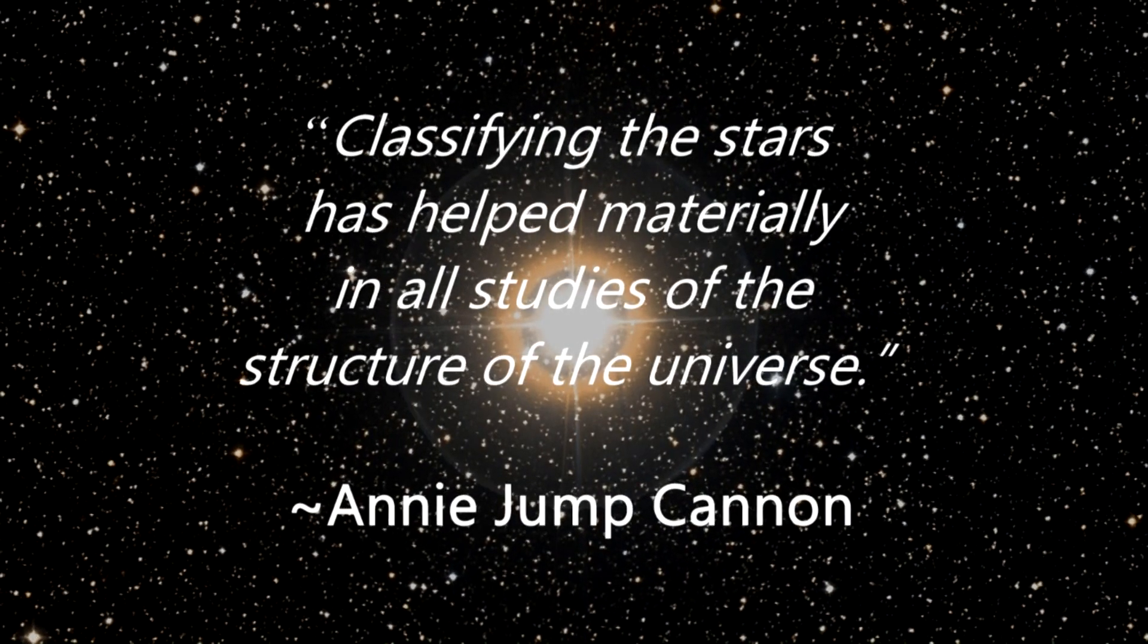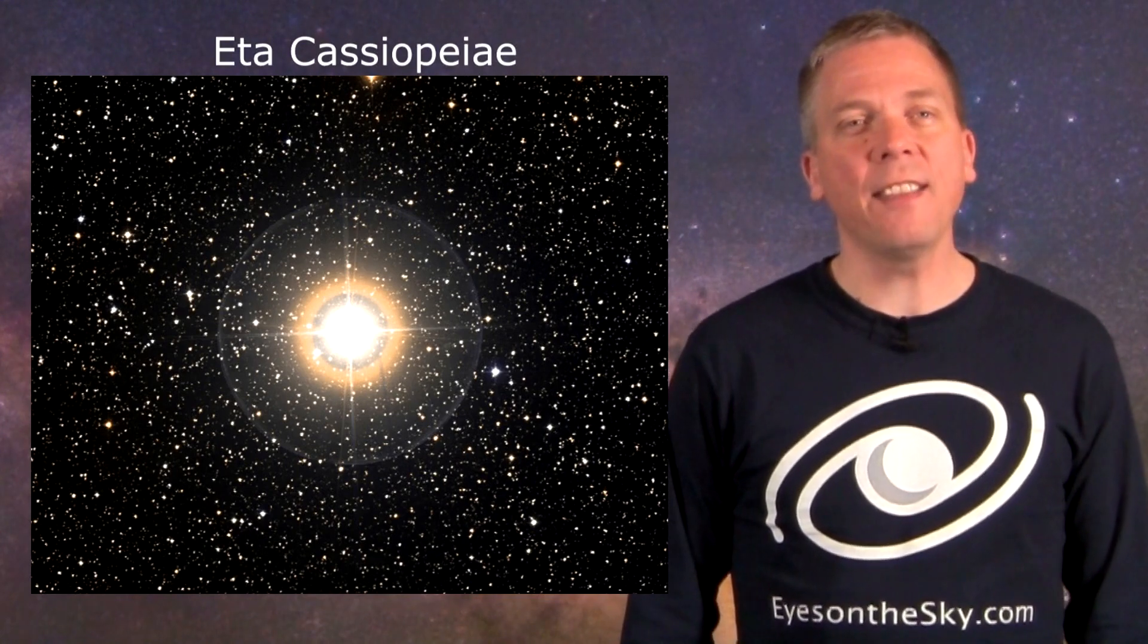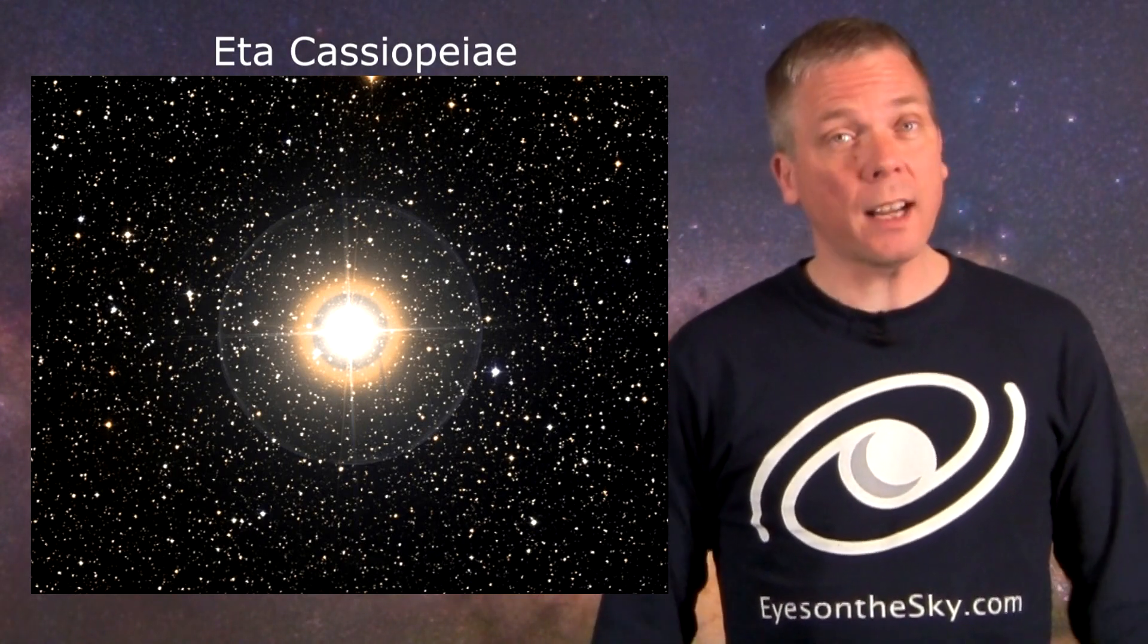Salutations celestial sight seers, I'm David Fuller from Eyes on the Sky. Eta Cassiopeiae, sometimes just called Eta Cass, is an interesting star in that it is one much like our own sun, and yet it offers some differences too.